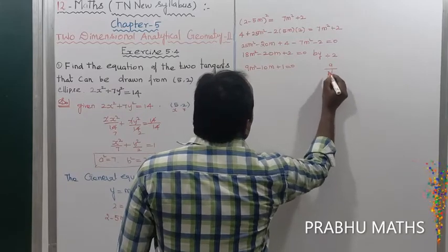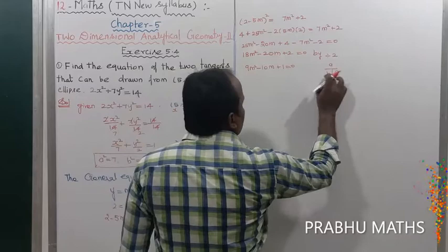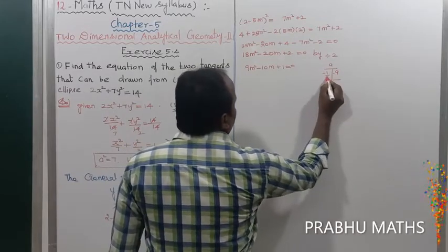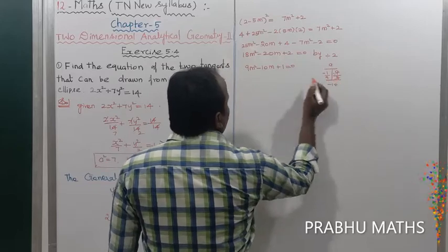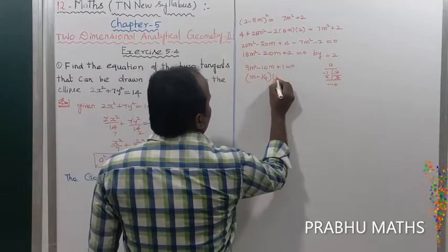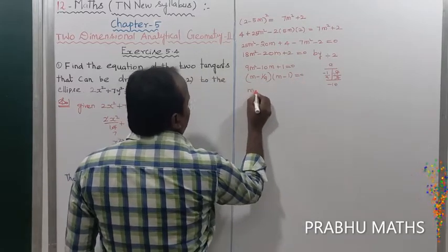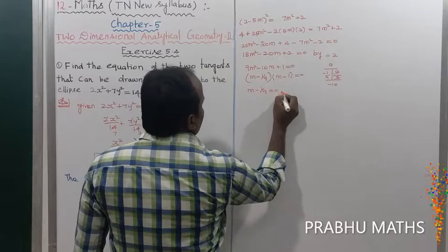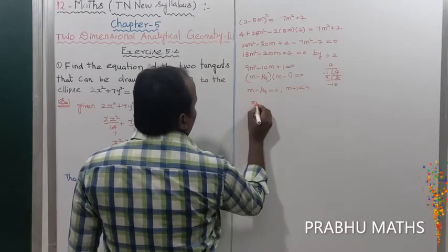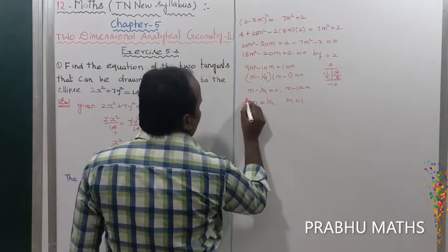Factoring 9m² − 10m + 1 = 0: the factors are (m − 1)(9m − 1) = 0. So m = 1 or m = 1/9.